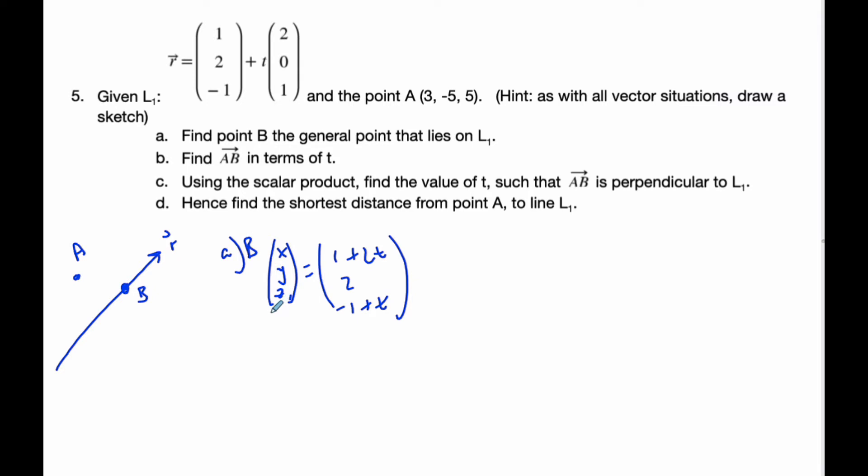Vector AB here in terms of t. To find vector AB, I'm going to subtract my head minus my tail. So it's 1+2t minus the point A which is 3.